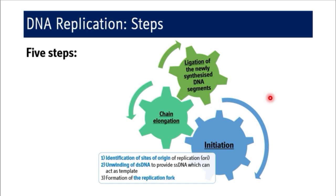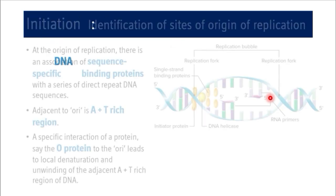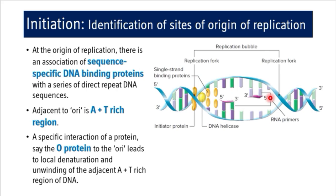The first step of the initiation phase is identification of sites of origin of replication. The replication machinery has to identify the site where it must start the replication process. There are three factors which enable the replication assembly to identify the site of origin: sequence-specific DNA binding proteins, direct repeat sequences in the DNA molecule, and a specific interaction with O protein.